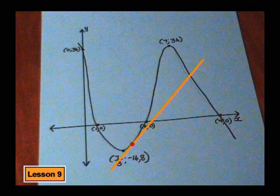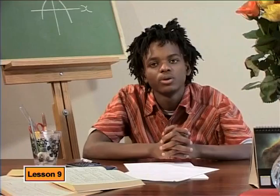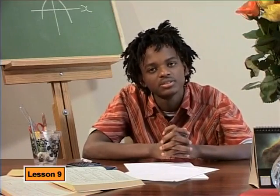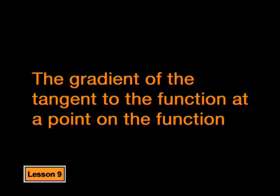In our case, we can calculate the coordinates of this point since we already know f of x. We either need another point or the gradient. Let me give you a hint - what have we been doing all of this time? We have been determining derivatives. And what is a derivative? A derivative is the gradient of the tangent to the function at a point on the function. We can determine the gradient of this tangent by using the derivative. Do you think you could manage to do that for us?